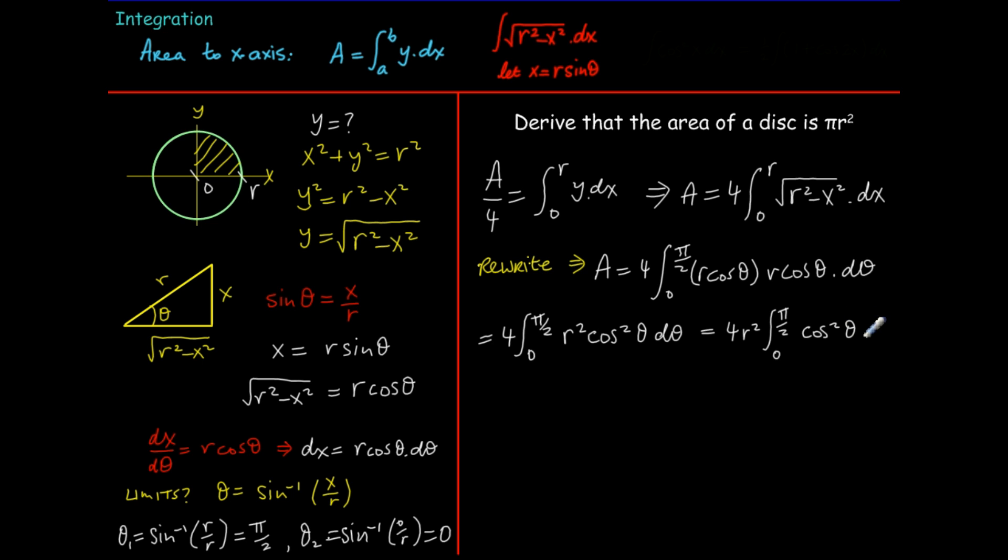Now we've integrated cos squared theta d theta before, it's actually given in the log tables, but the substitution we can make is cos squared theta d theta is the same as a half the integral of one plus cos two theta d theta. There is another way, the log tables give you a formula for cos squared theta d theta as well, but using this method we've used before.